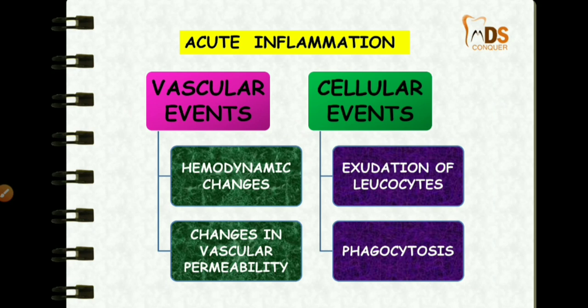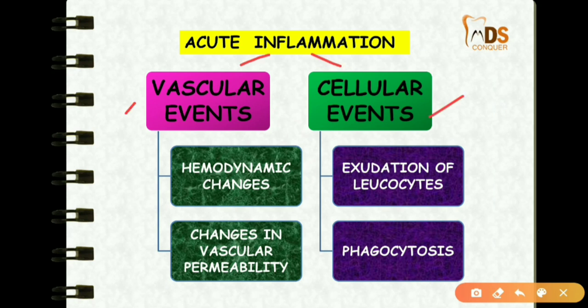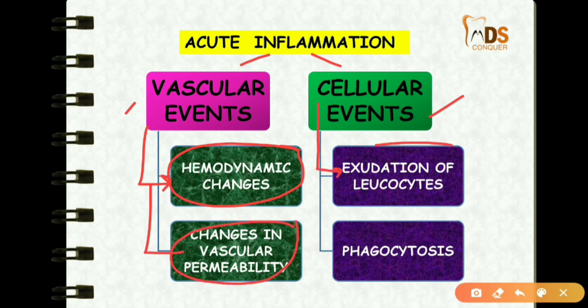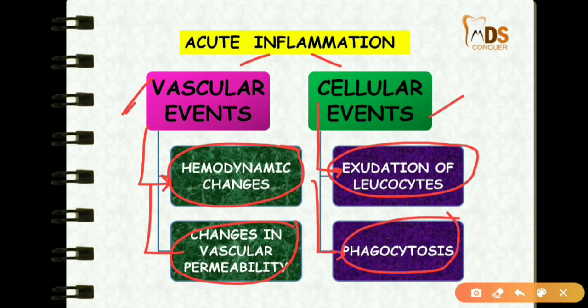The events taking place in acute inflammation are very important, and concept questions can be given from the vascular events and the cellular events. Acute inflammation has two types of events: vascular events and cellular events. Vascular events include hemodynamic changes and changes in vascular permeability, while cellular events include exudation of leukocytes and finally phagocytosis.